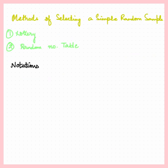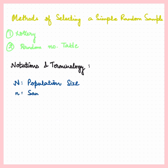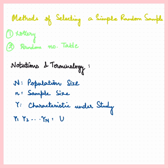Now let's cover some notations. We have the population size as N and the sample size as n. Y is the characteristic under study. Y₁, Y₂, ..., Y_N are the units in the population, and y₁, y₂, ..., y_n are the units in the sample.